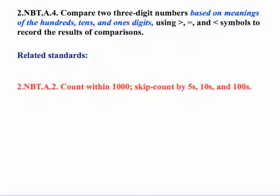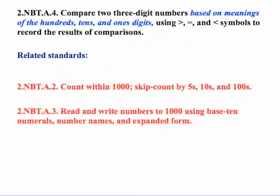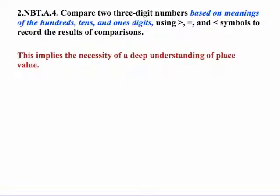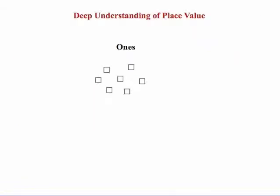This is another related standard in the same grade. We have standard 2.NBT.A.2, which is about counting within one thousand. We also have 2.NBT.A.3, where students are expected to read and write numbers to one thousand using base ten numerals, number names, and expanded form. And this expanded form is important.